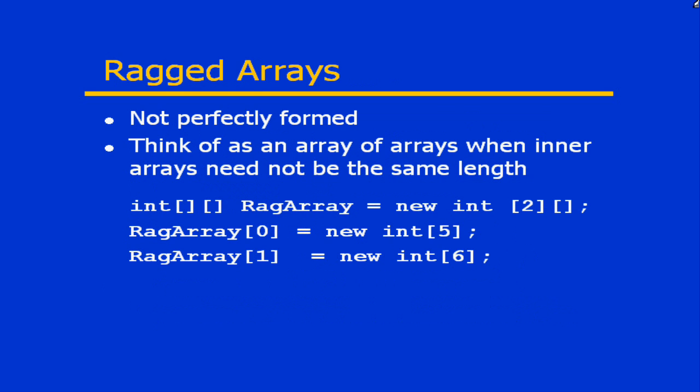Rectangular arrays are easy to deal with, but sometimes they may not necessarily represent exactly the type of structure you're interested in working with. If you want arrays that are not perfectly formed, you can use what's called a ragged array. The easiest way to think of a ragged array is as an array of arrays, where the outer dimensions do not necessarily have to be the same size.